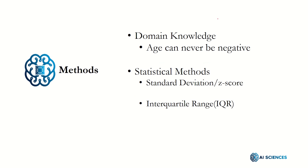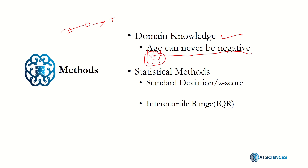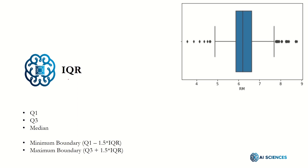Now, what are the methods to detect outliers? The first method is domain knowledge. For example, we all know that age can never be a negative number — it starts from zero. So if in a column of age we see some negative values, we'll obviously know that these are outliers or noise that we have to remove. And then there are some statistical methods we will be studying today: one is standard deviation or Z-score, and the second is IQR, or interquartile range. Let's start with IQR.